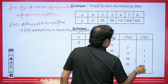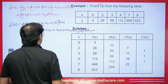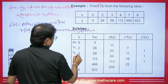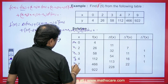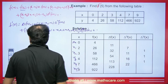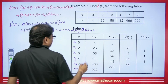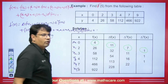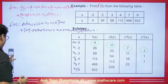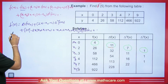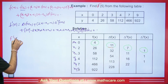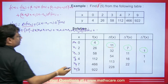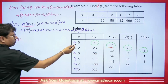Now from this table, we will find the value of the derivative, taking x0 = 0. So here x0 = 0, x1 = 2, x2 = 3, x3 = 4, x4 = 7, x5 = 9. If x0 = 0, then f(x0) is the first value, Δf(x0) = 11, Δ²f(x0) = 7, and Δ³f(x0) = 1. We will pick up these values and put them into the formula.